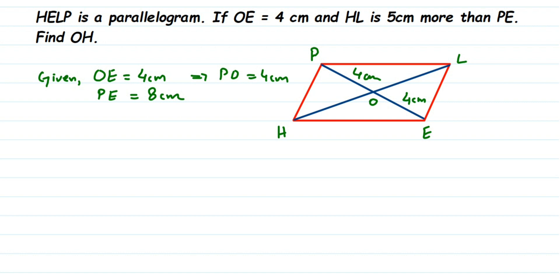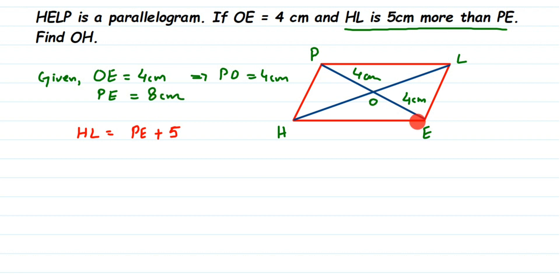We're given that HL is 5 centimeters more than PE. So HL = PE + 5. Since PE = 8 centimeters, HL = 8 + 5 = 13 centimeters. That gives us the length of the whole diagonal HL.